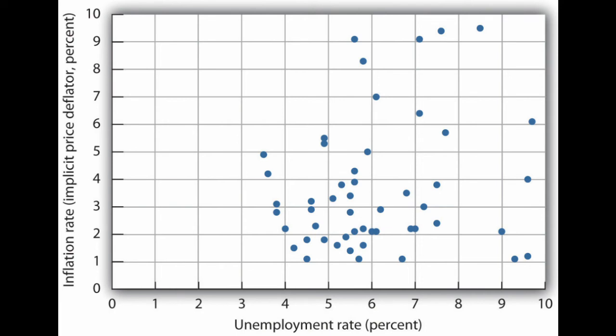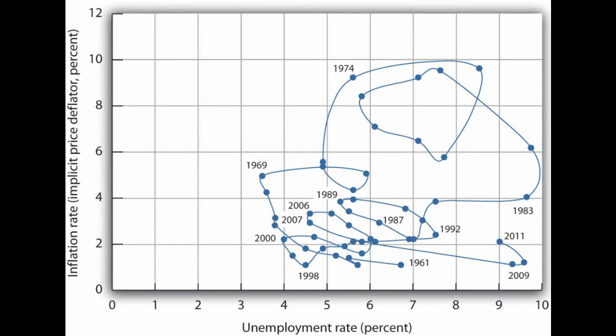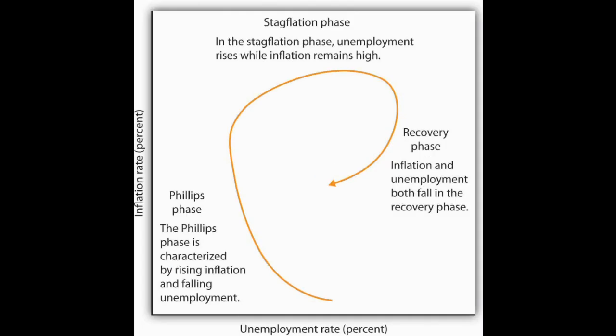If we take that graph that looks like scattered buckshot and draw a chronological line through it, we can see what looks like swirls or loops. Today, we think these loops can be broken up into expected phases. When unemployment and inflation have a negative relationship, we call this the Phillips phase. When inflation and unemployment have a mostly positive relationship — both grow together — we call this the stagflation phase. Stagflation left serious scars on this nation's society and economy. The final phase, the recovery phase, sees both inflation and unemployment falling together.